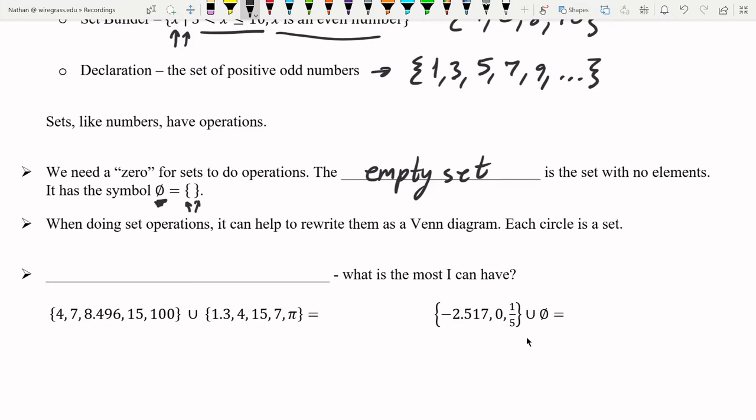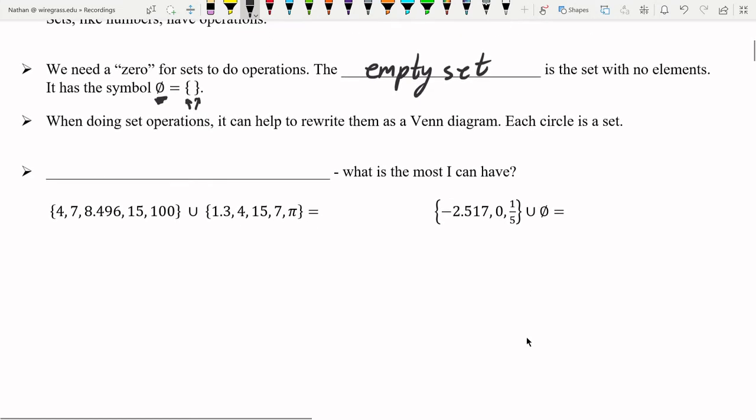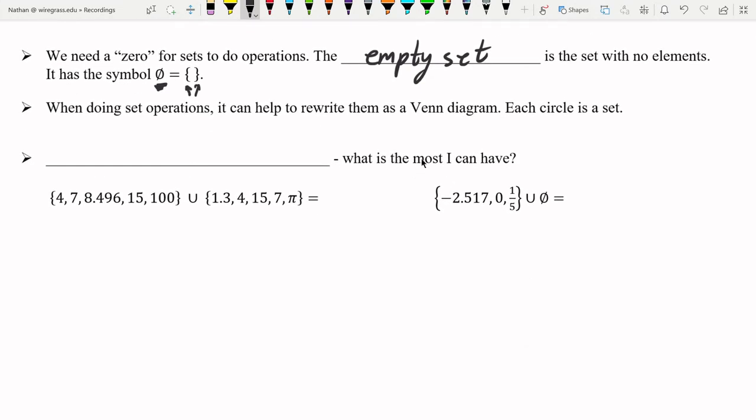So when we're going to be doing these operations, it's important to visualize it kind of in your mind. A helpful way of doing that is a Venn diagram. And then each circle in the Venn diagram is just a set that you're talking about. Now, I will show you that using this in our first operation, which is the union.